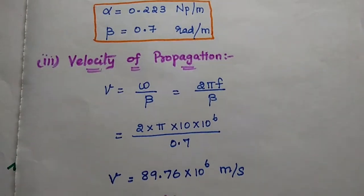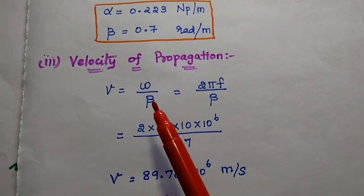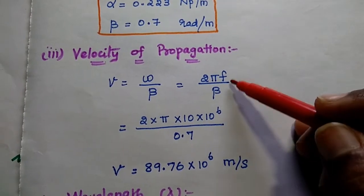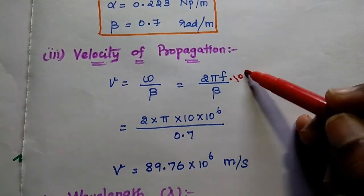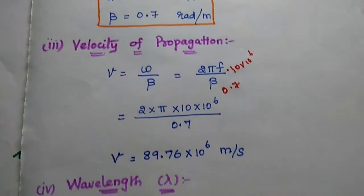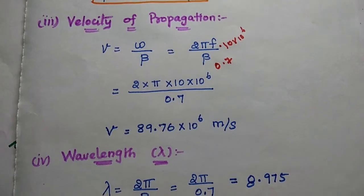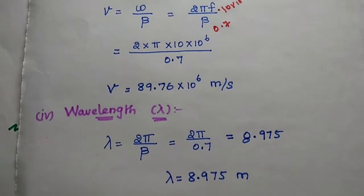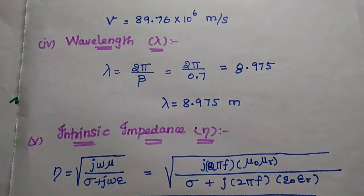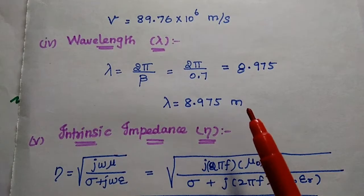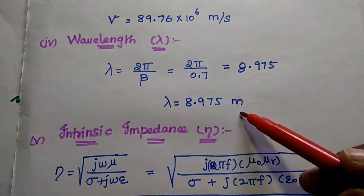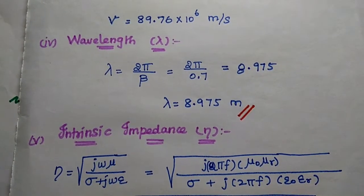Next, we find the velocity of propagation: v equals omega divided by beta, where omega is 2*pi*f. Substituting f as 10 MHz and beta as 0.7, we get 89.76 into 10 to the power 6 meters per second. The wavelength equals 2*pi divided by beta, so with beta equal to 0.7, the wavelength is 8.975 meters.